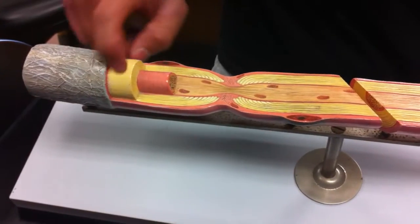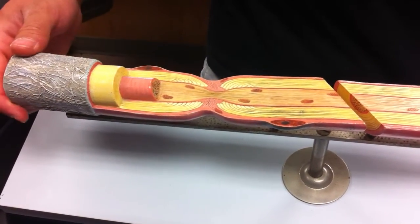Along the axon here again you have your myelin sheath or Schwann cell surrounded by the endoneurium.